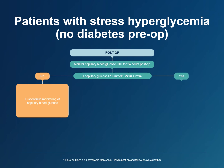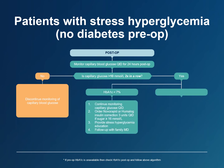If the capillary blood glucose level exceeds 10 millimoles per liter on two consecutive occasions, then the patient may have stress hyperglycemia. Check hemoglobin A1c. If hemoglobin A1c is less than 7%, continue QID capillary blood glucose monitoring and prescribe three units of rapid subcutaneous insulin correction QID, to be given if capillary glucose exceeds 16 millimoles per liter. Most importantly, educate the patient about stress hyperglycemia and make sure they follow up with their family physician after discharge from the hospital. The family physician will need to monitor for the onset of diabetes.